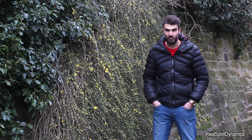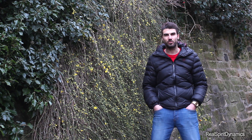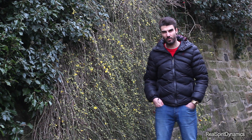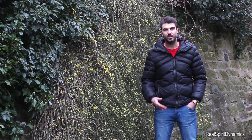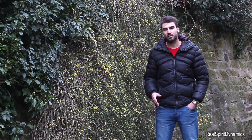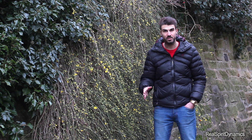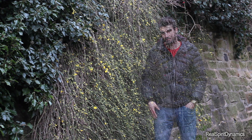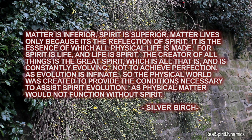This brings me back to the spirit of Silver Birch. Silver Birch was a spirit that came through a trans-medium in the early 1900s, and Silver Birch's mission was to come to earth to tell us the reality of life — what we're here for and what happens when we pass to the spirit dimension. Silver Birch has given the most realistic explanation for all this so far. What Silver Birch said was: matter is inferior, spirit is superior. Matter lives only because it is the reflection of spirit. It is the essence of which all physical life is made, for spirit is life and life is spirit. The creator of all things is the great spirit, which is all that is, and is constantly evolving — not to achieve perfection, as evolution is infinite.